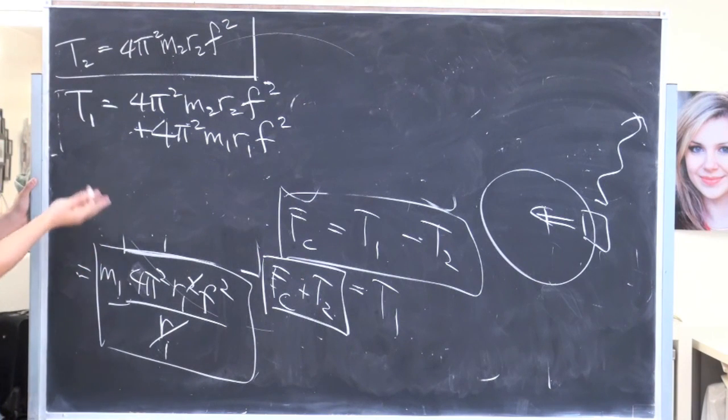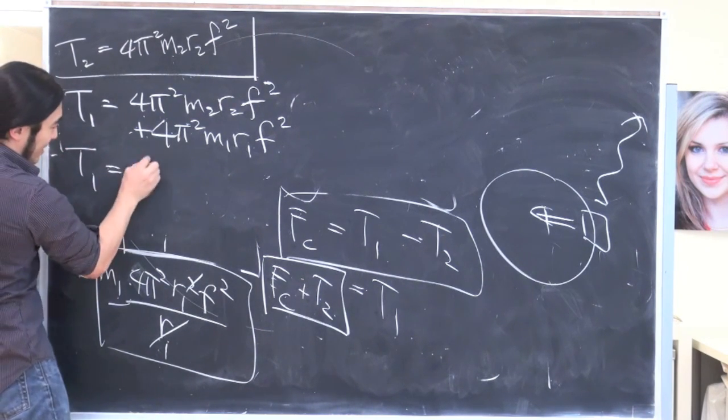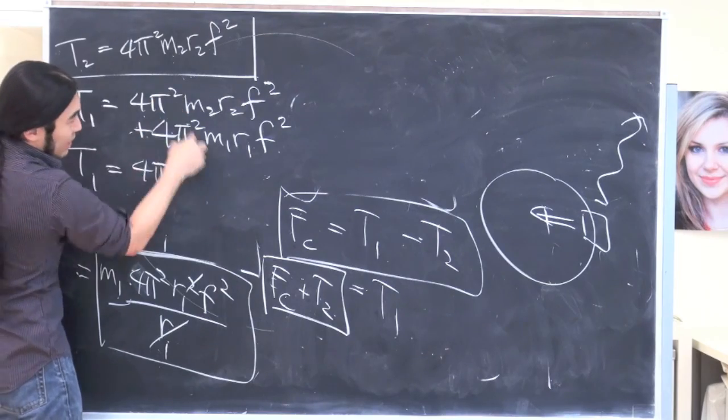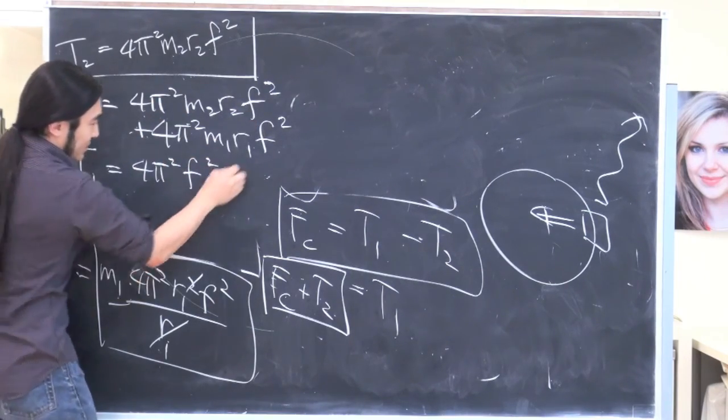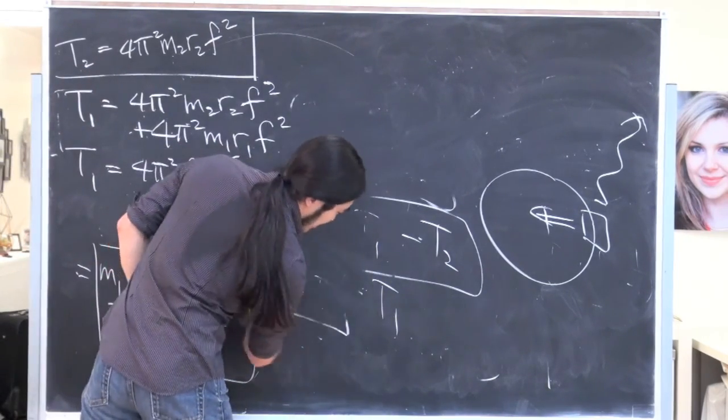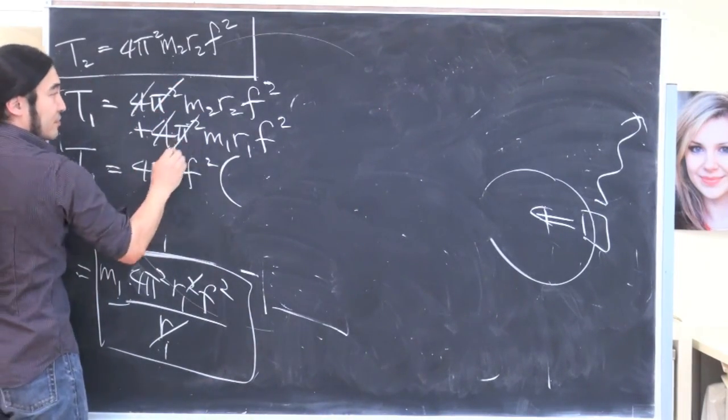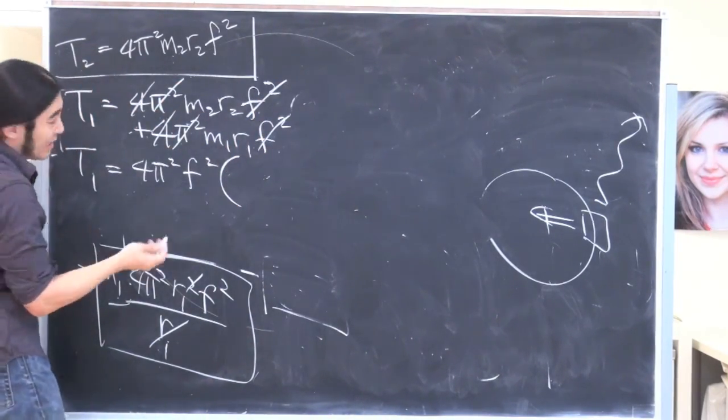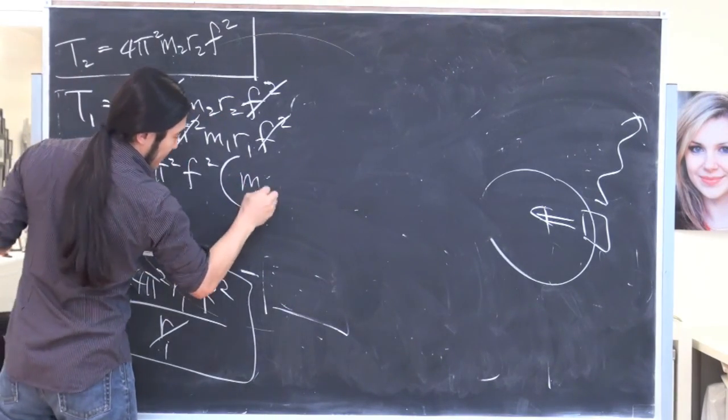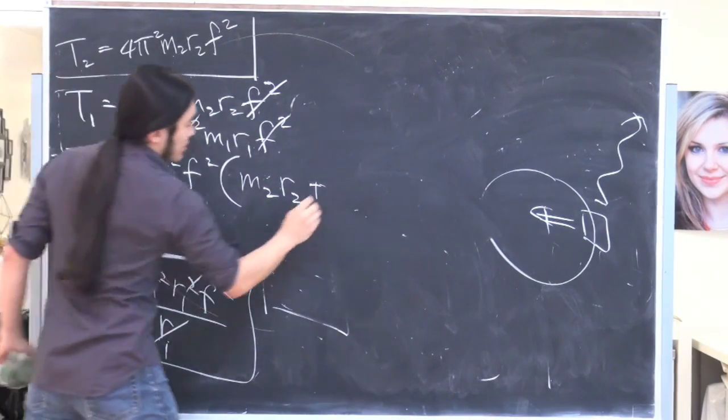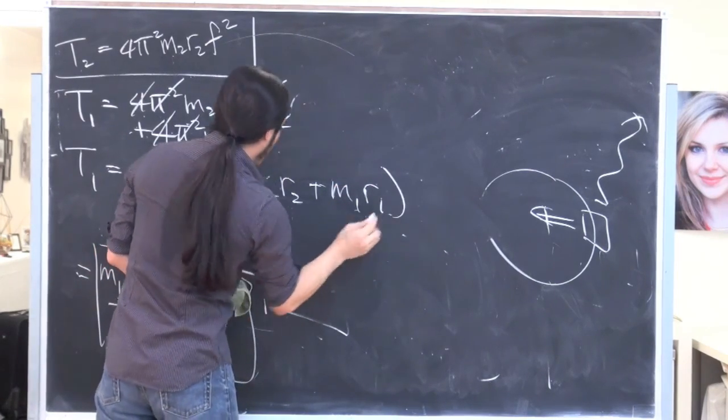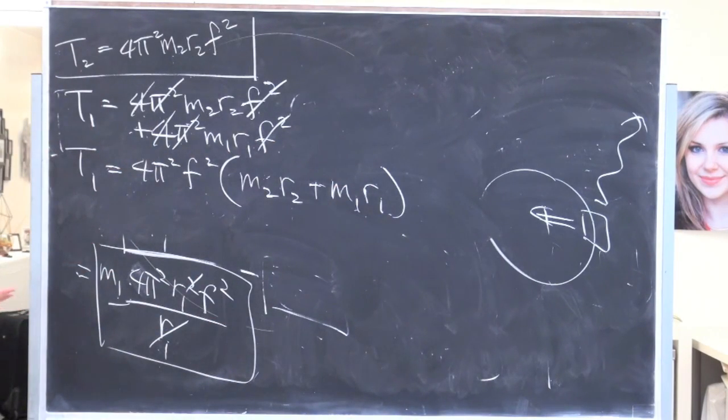So now all we do is just factor it out to make it pretty. So T1 is, we can factor out that 4π² squared. We can also factor out that F squared. So all we're doing now is factoring this out. And then what we have left over is M2 R2 plus M1 R1. Not that bad, right?